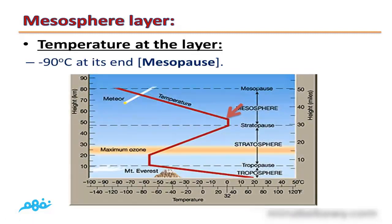Temperature at this layer: As you can see, the temperature at this layer decreases gradually. The temperature starts at 0°C at its beginning, then decreases gradually until it reaches negative 90°C at its end at mesopause.